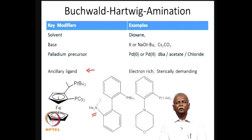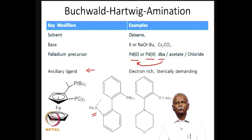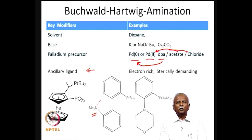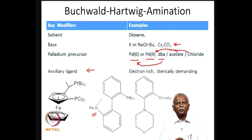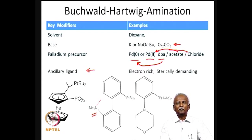The palladium precursor can be either palladium(0) — stabilized by DBA (dibenzylideneacetone) — or palladium(II) as acetate or chloride. The base is either potassium or sodium tert-butoxide; tert-butoxide is a bulky ligand that, even if it substitutes on palladium, is readily replaced by the less hindered amine. Cesium carbonate is an extremely effective base that gives high yields. Dioxane is the most convenient solvent, as it allows heating to higher temperatures without loss of solvent or requiring a high-pressure reactor.